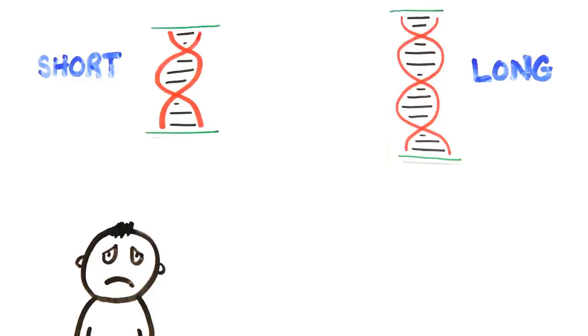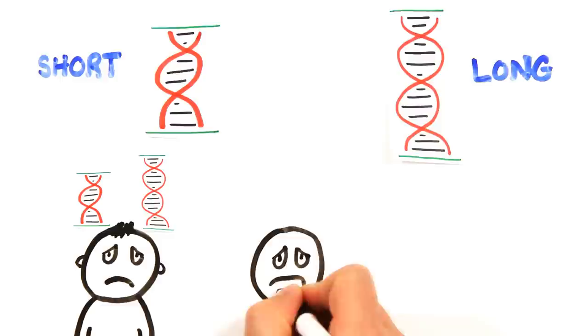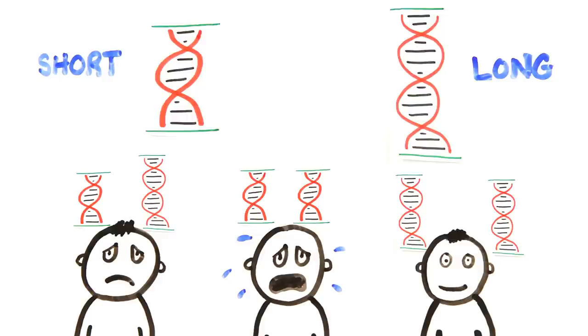After tracking 800 young adults over five years, the study revealed that 33% of individuals with one short version became depressed after stressful life events, and people with two short genes fared even worse. On the other hand, those with two long genes were much less likely to become depressed with similar life stress.